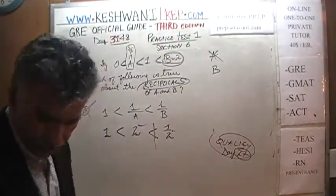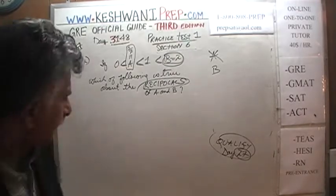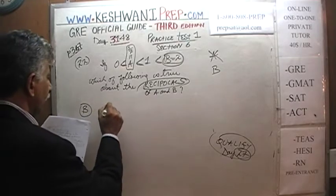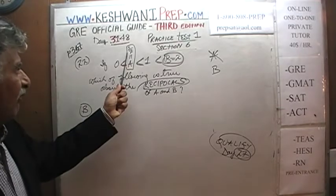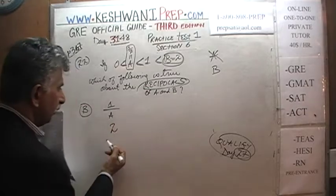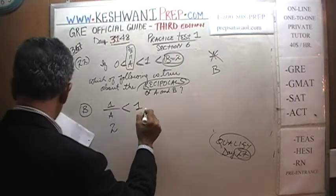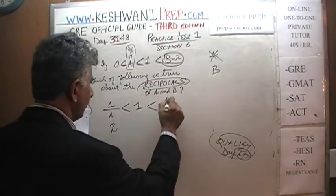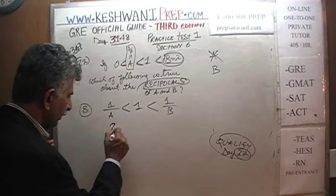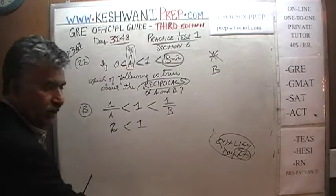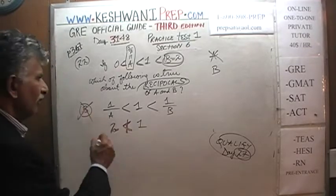Let's look at B. B says: 1 over A is less than 1, which in turn is less than 1 over B. We established that 1 over A is 2. Is 2 less than 1? Obviously not — 2 cannot be less than 1. That is wrong. B is not the answer.